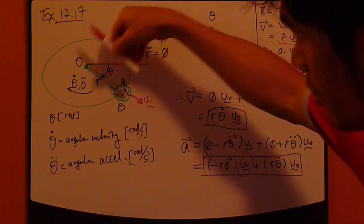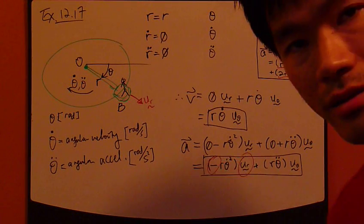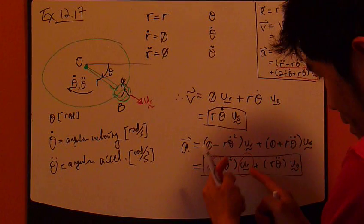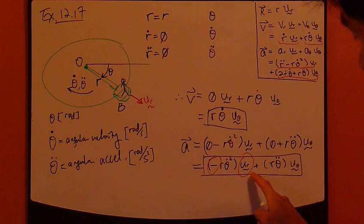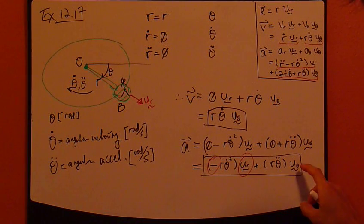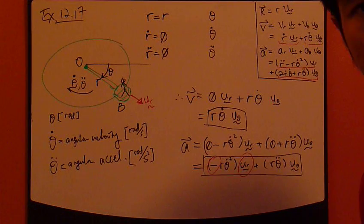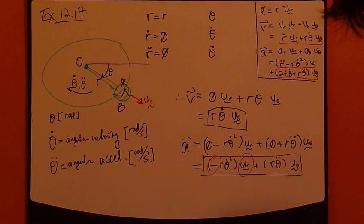But, look at this. This takes care of it. So, they are actually equivalent. This negative, u_r, is u_n. And this, u_theta, is the tangent coordinate. So, that's all.